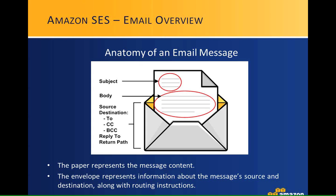From a high level, assuming everyone has a pretty thorough understanding of email, email is composed of two different sections. You've got your envelope information, which includes the source, the destination, the To, CC, BCC lines, your reply-to, and the return path header. Within that envelope, you've got the message itself, which conveys what you're trying to get across to the recipient.